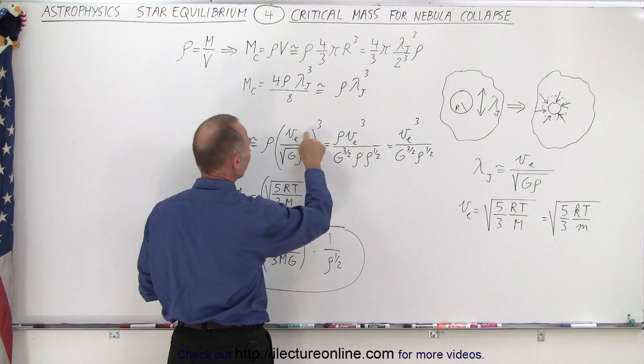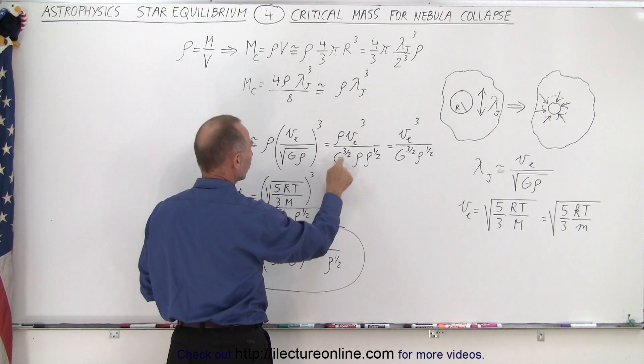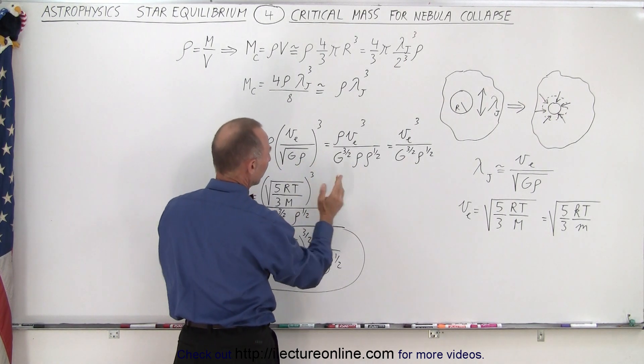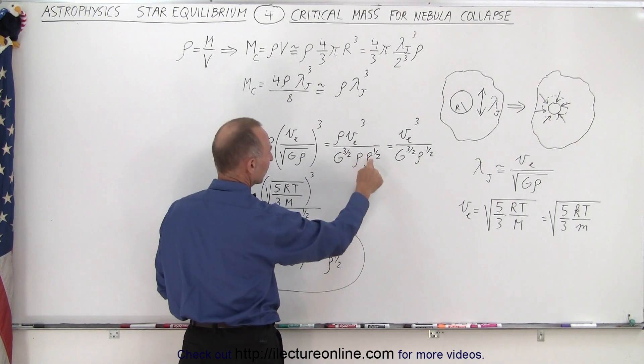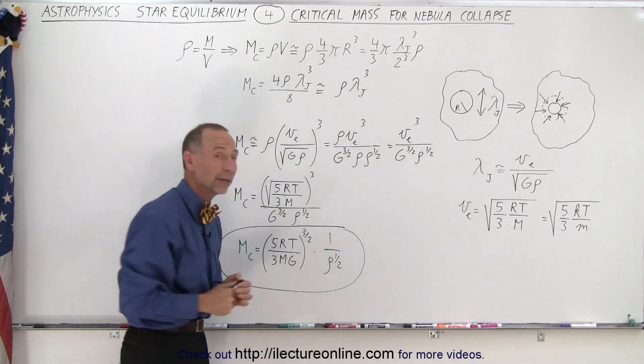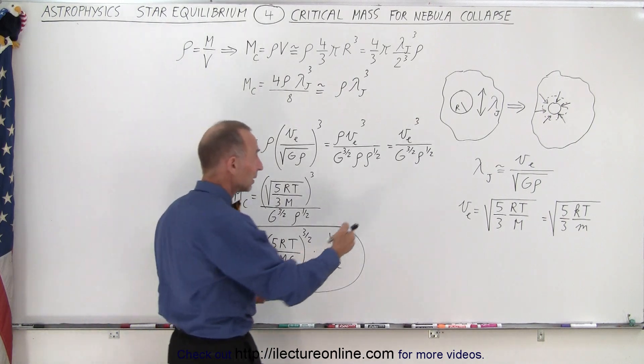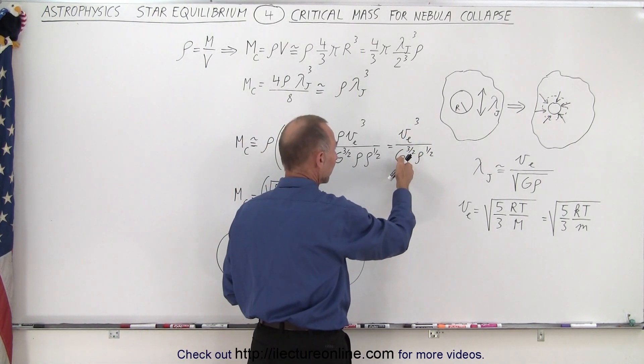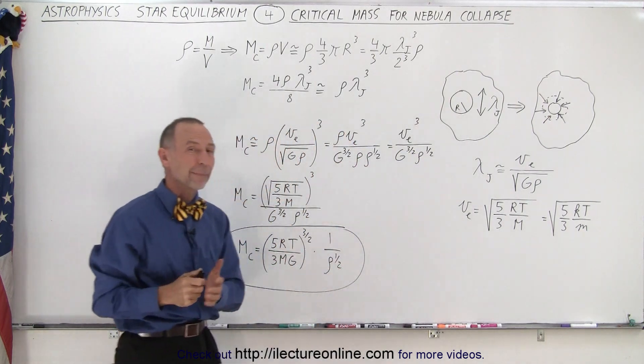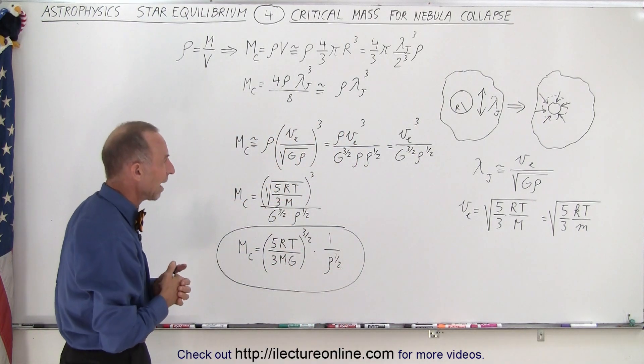We cube the escape velocity. And then we have G to the 3/2 power and density to the 3/2 power. But I separated it into density to the first power and density to the 1/2 power. Then you can see that the density of the numerator and the denominator cancel out. And you're left with the escape velocity cubed divided by the gravitational constant to the 3/2 power divided by the density to the 1/2 power.